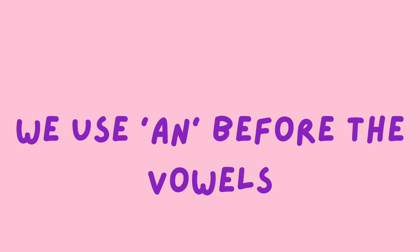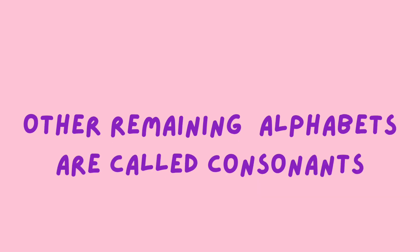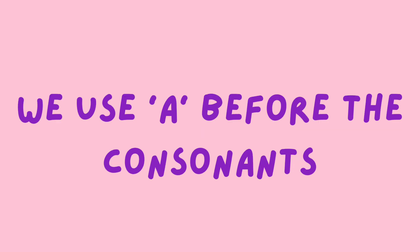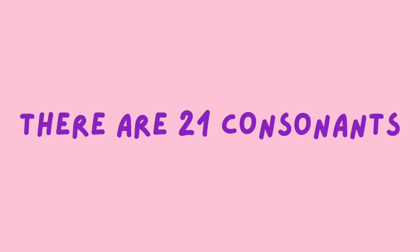We use 'an' before the vowels. Other remaining alphabets are called consonants. We use 'a' before the consonants.